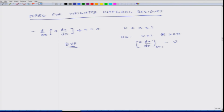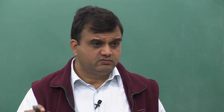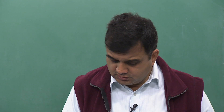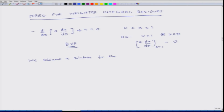In boundary value problems, we have to know the conditions on all the boundaries. Let us say that we assume a solution, and here we are not going to break it up into small elements. We are just considering the whole domain as one single element. So we assume a solution for the entire domain, that is 0 to 1.